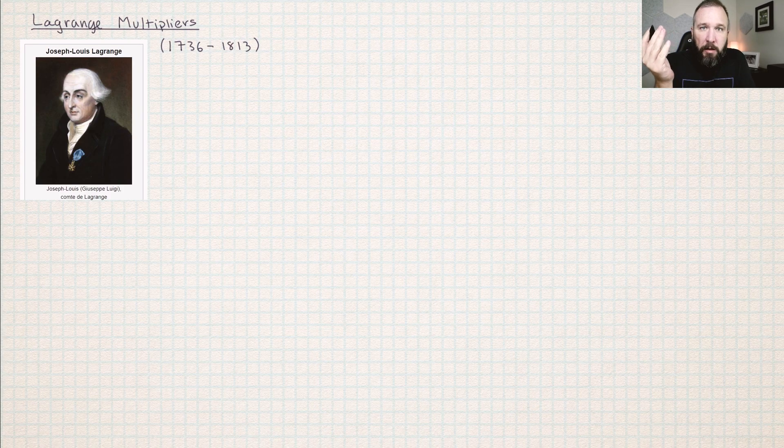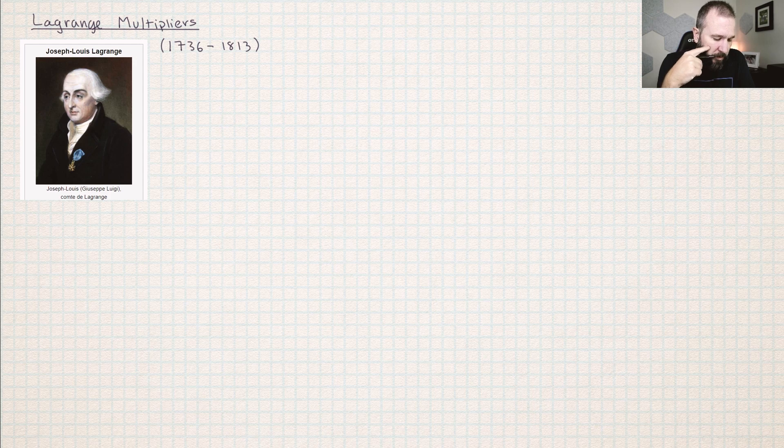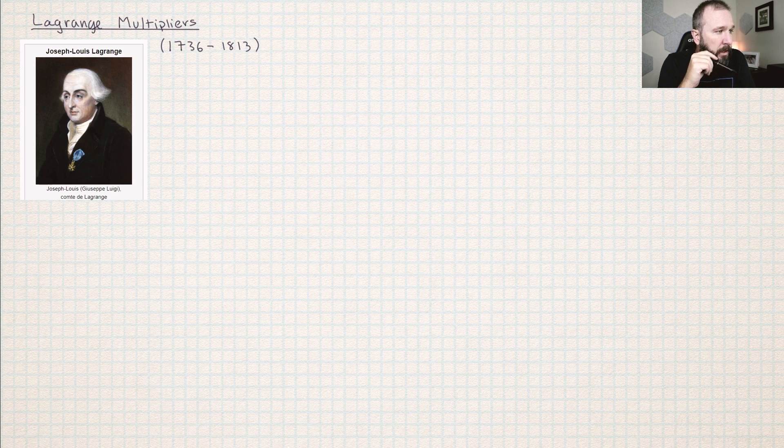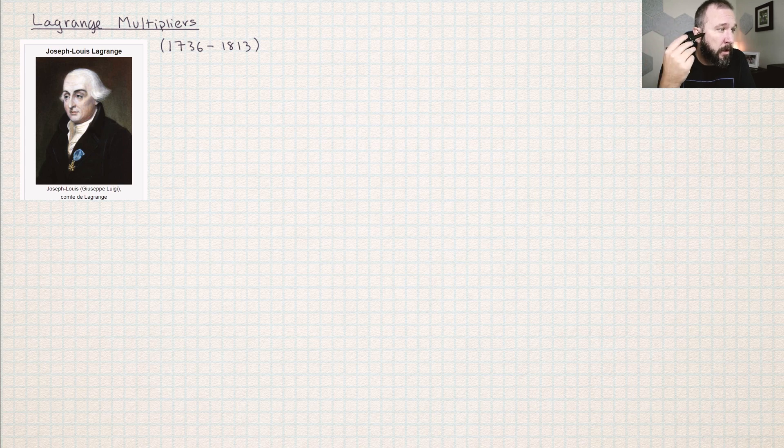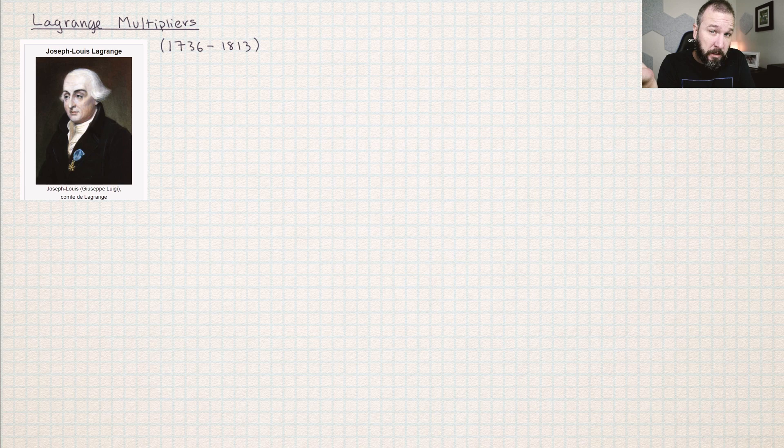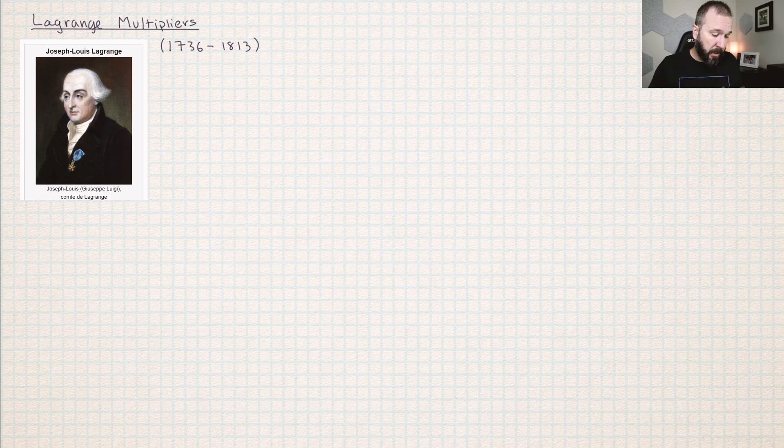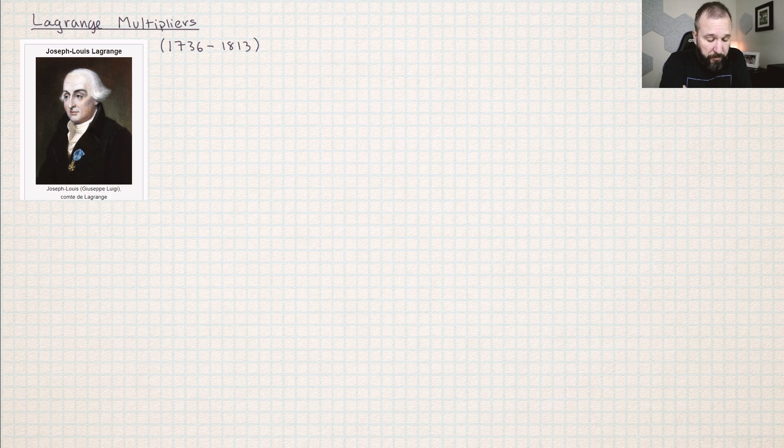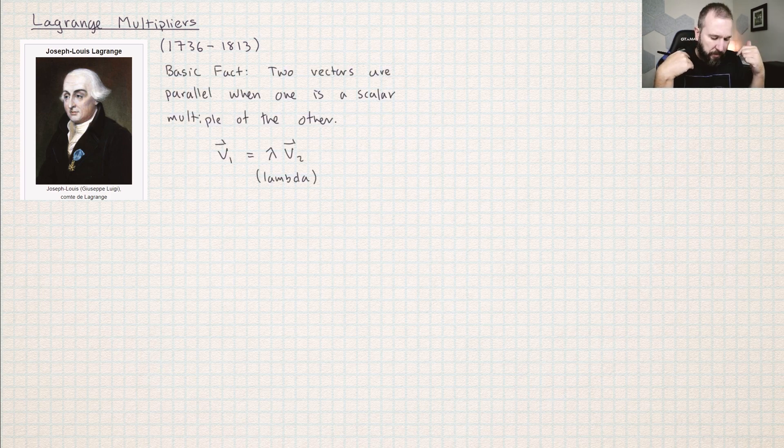So this is the man here, Lagrange. He was alive in the 1700s to the early 1800s. It says here that he was the successor by recommendation of Euler as the director of mathematics at the Prussian Academy of Sciences in Berlin. That's basically the biggest deal that you can have. This is one of the biggest names in the history of math. So we name this method after him as a way of honoring him.